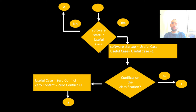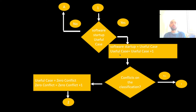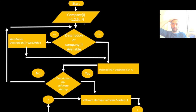From the software startups, we apply another derivative to determine whether each software startup description is a useful case or not. If it is a useful case, we confirm it and increment the counter: useful_case = useful_case + 1. If it is not, we go back to the beginning.